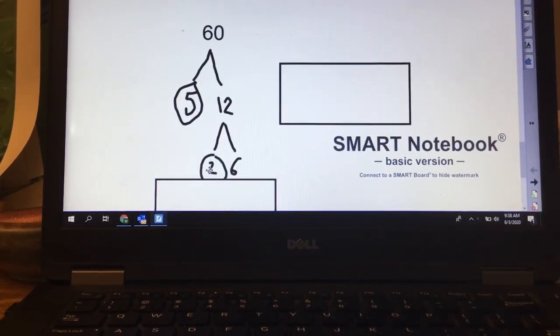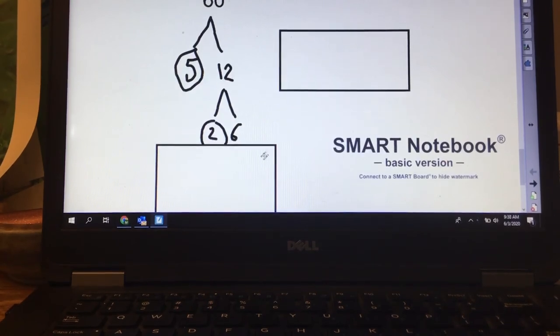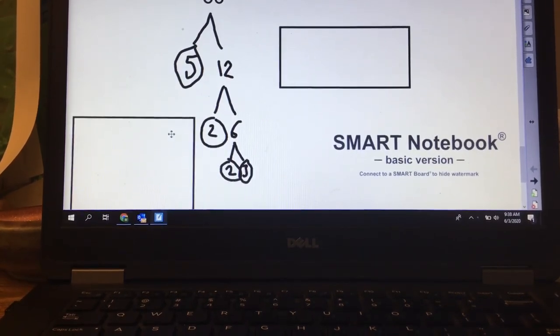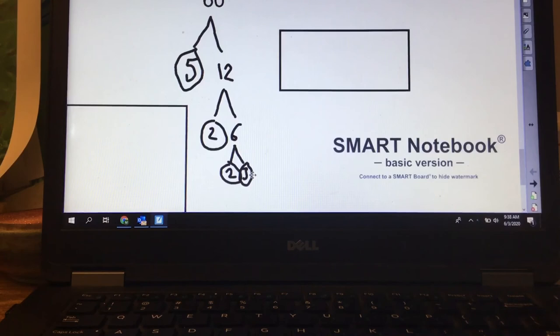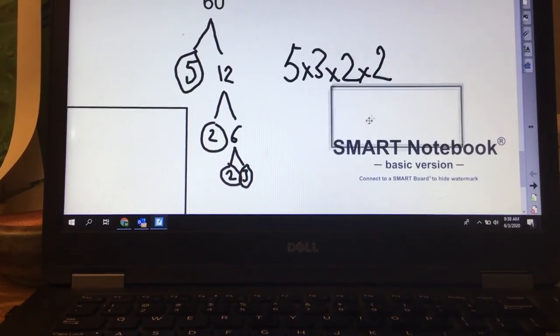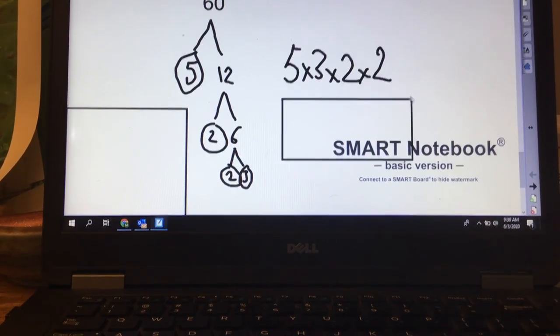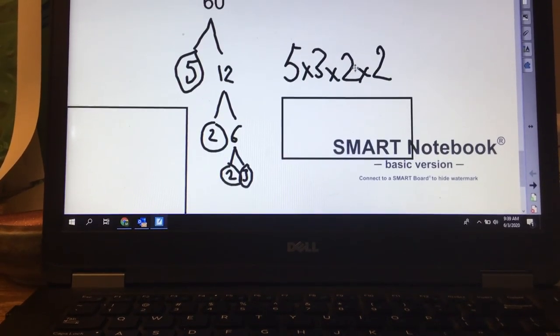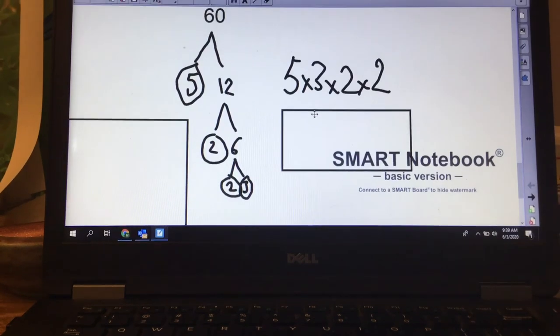So I've divided my 12 by 2, I'm left with 6. And now I divide my 6, which is even, by 2 and I get 3. So my prime factorization will be 5 times 3 times 2 times 2, or 5 times 3 times 2 to the power of 2 because there's two of them.